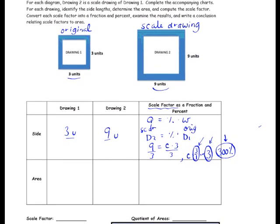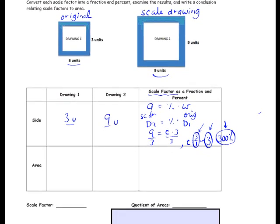Then the area. We know that the area of a square is the side squared. So drawing 1 has area 3 times 3, or 9 square units. For drawing 2, we have 9 times 9, which is 81 square units.